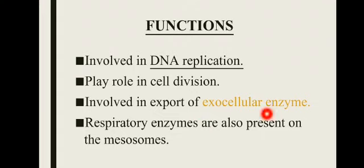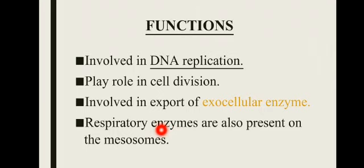Mesosomes کا اہم function یہ ہے کہ یہ respiratory enzymes کہلاتے ہیں کیونکہ respiration میں help کرتے ہیں۔ Bacteria کے اندر mitochondria موجود نہیں ہوتا، تو یہ ATP کیسے generate کرتے ہیں؟ Mesosomes یا plasma membrane کے اندر respiratory enzymes ہوتے ہیں جو organic molecules کو break کر کے simpler molecules میں convert کرتے ہیں اور ATP generate کرتے ہیں۔ یہ ATP bacterial cellular activity کے لیے use ہوتا ہے۔ Mesosomes ایک most important short question ہے: what are mesosomes and their functions؟